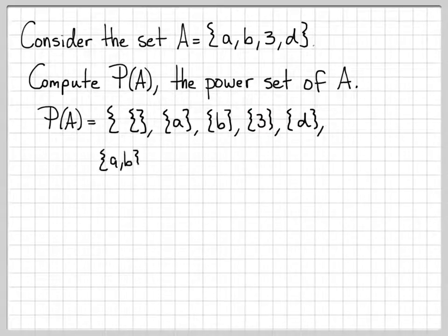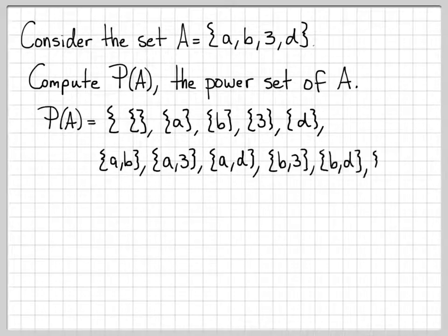Now we need to list all of the two element sets. So there's a lot more of these. There are 6 two element subsets. So we list all those, just all the combinations of how you can pick two out of the four things.